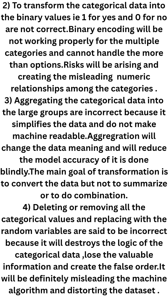Binary encoding does not work properly for multiple categories and cannot handle more than two options. Risks arise by creating misleading numeric relationships among the categories. Aggregating category data into larger groups is also incorrect because it simplifies the data and does not preserve meaning. Aggregation changes the data's meaning, reduces model accuracy, and the main goal of transformation is to convert data, not to summarize or combine it.